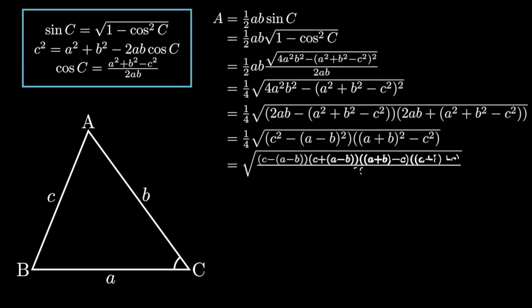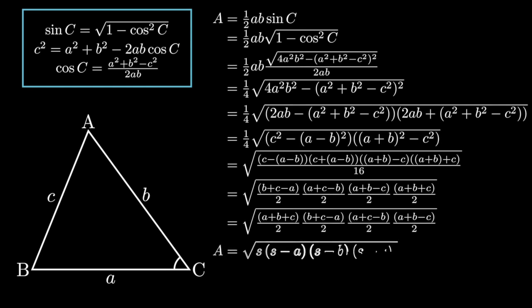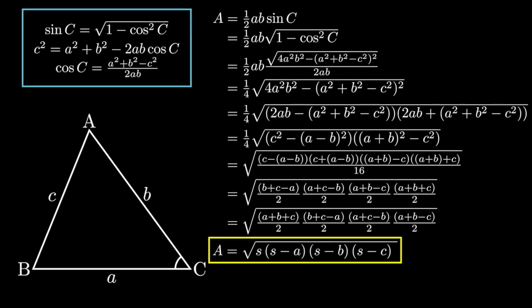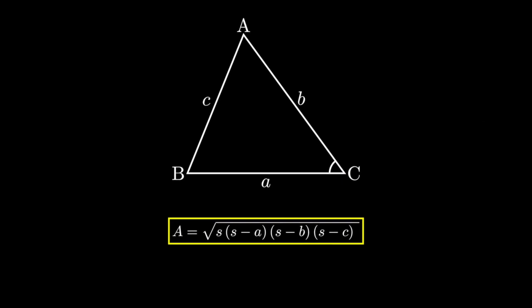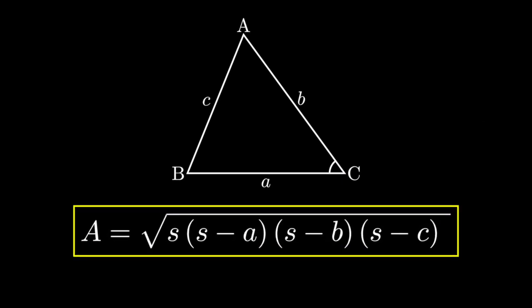However, these solutions take many lines of messy algebra and no one wants to plow through them because they're bashy and, most importantly, easy to make mistakes on. However, taking a step back, we notice that the simplest form of Heron's formula has the semi-perimeter of a triangle in it, and we can utilize this property to our advantage.